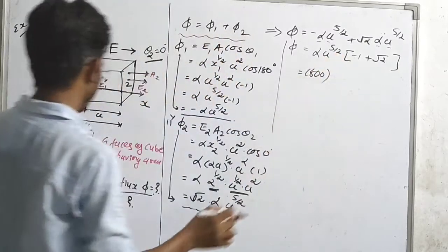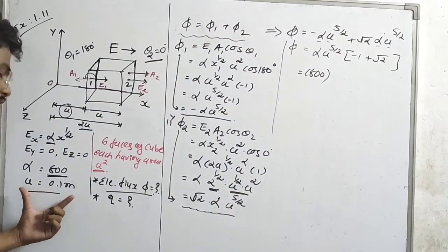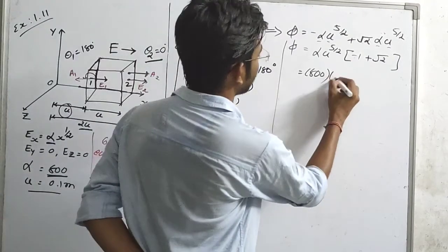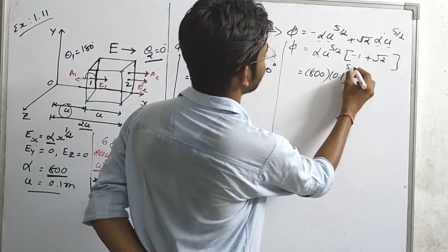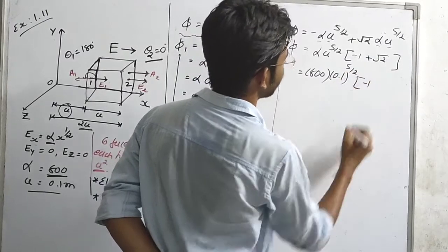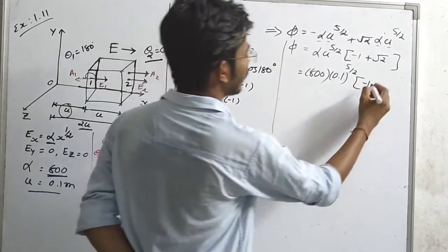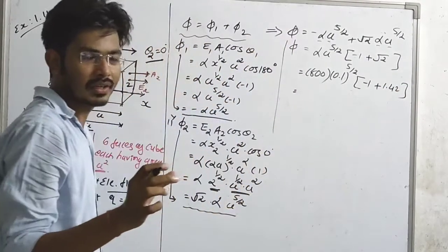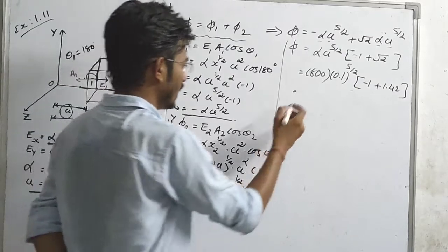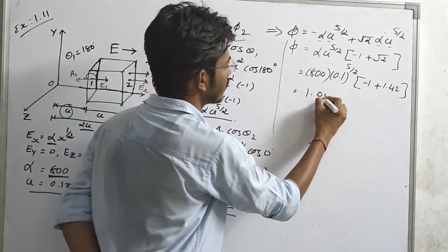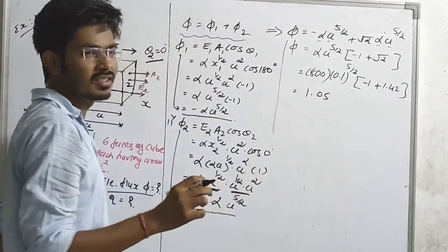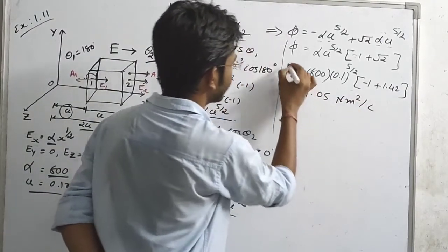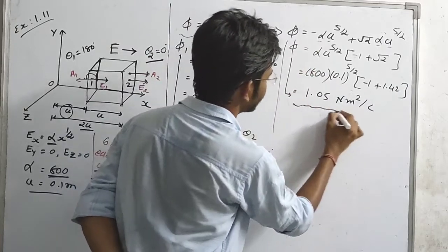We put alpha equal to 800 and small a equal to 0.1 meter, so: 800 times (0.1) raised to 5/2, times (root 2 minus 1). The value of root 2 is approximately 1.414, so (root 2 minus 1) equals 0.414. After calculation, the answer is 1.05. The unit of electric flux is Newton meter squared per Coulomb. So our total flux phi equals 1.05 N·m²/C.